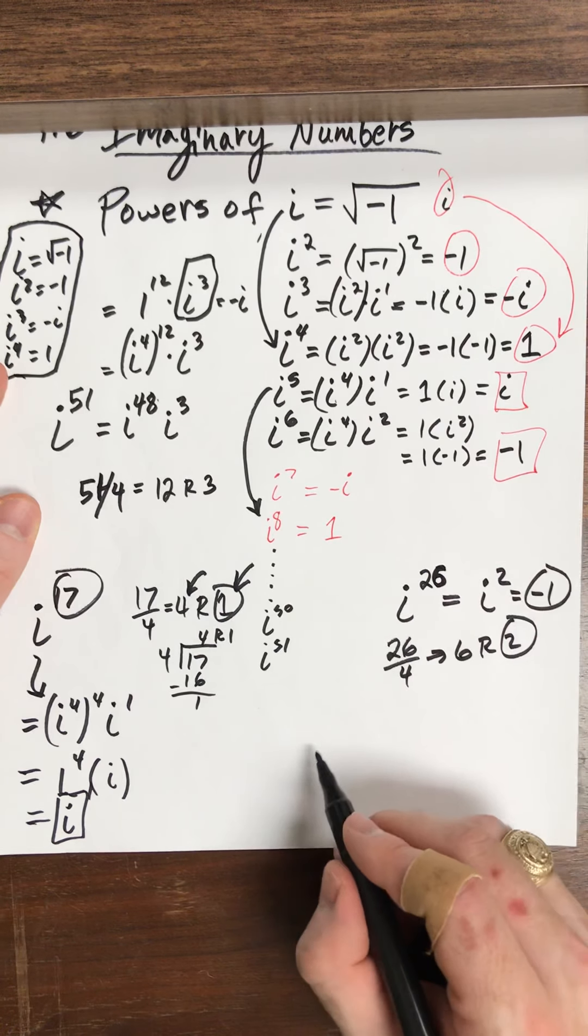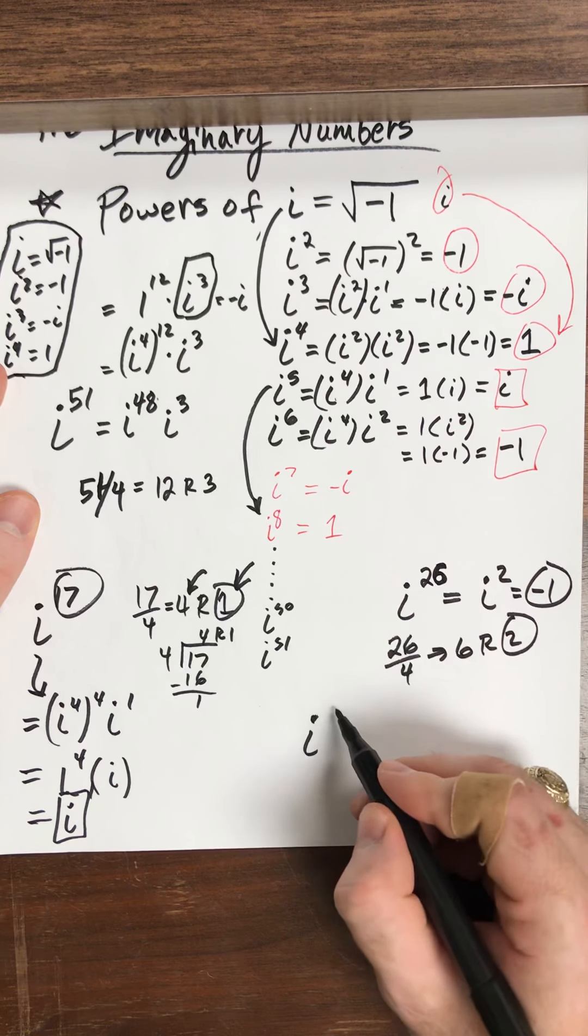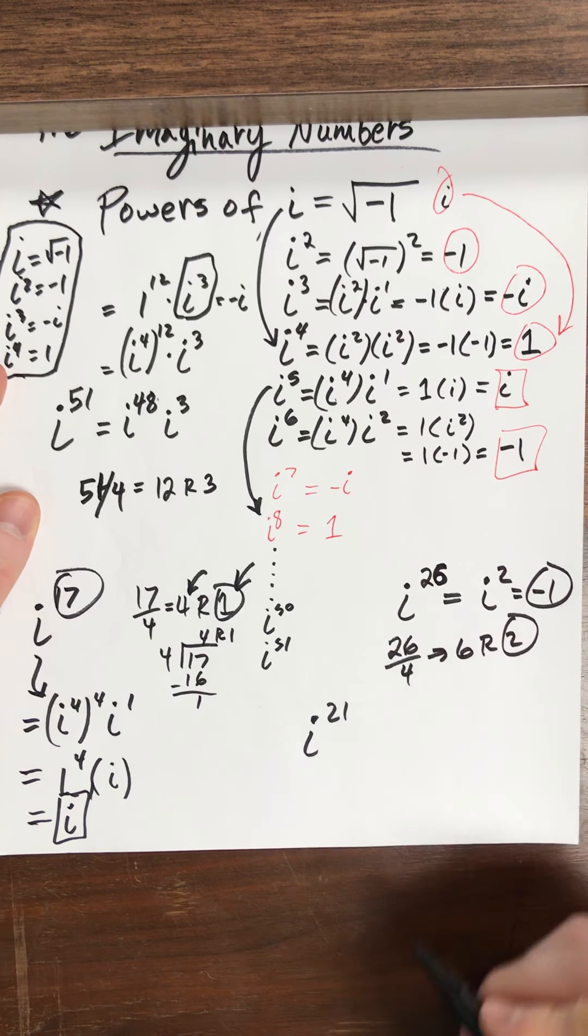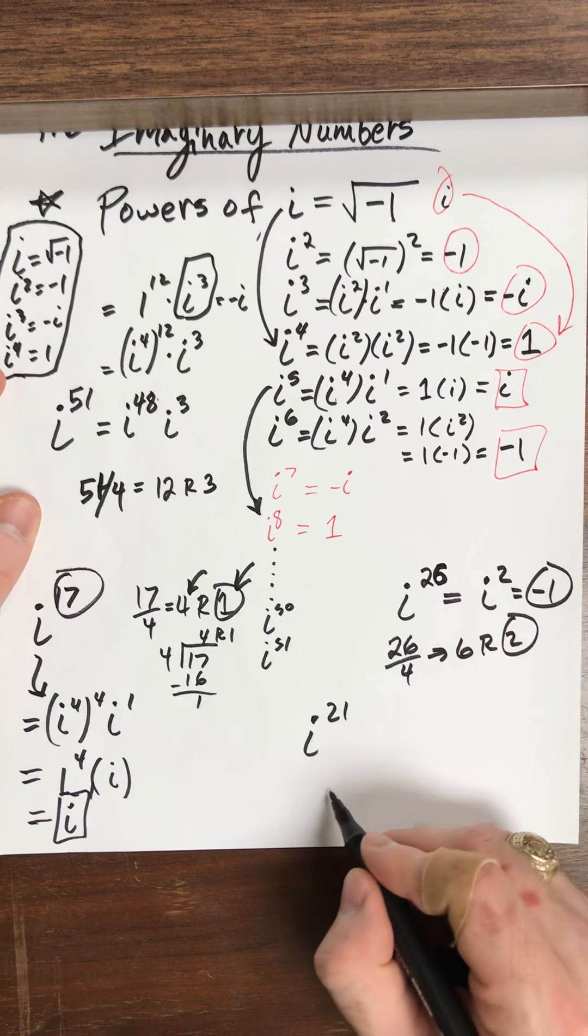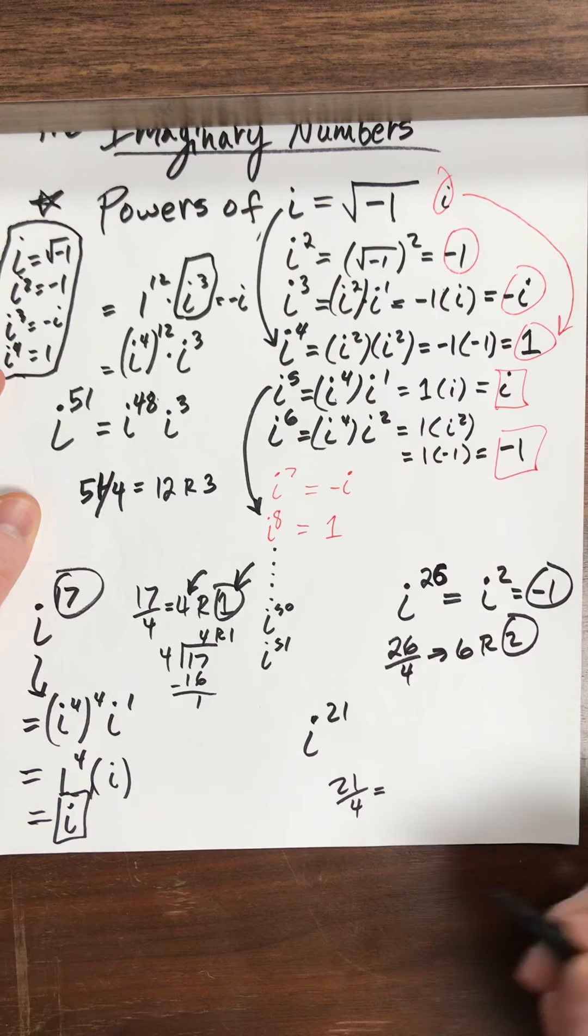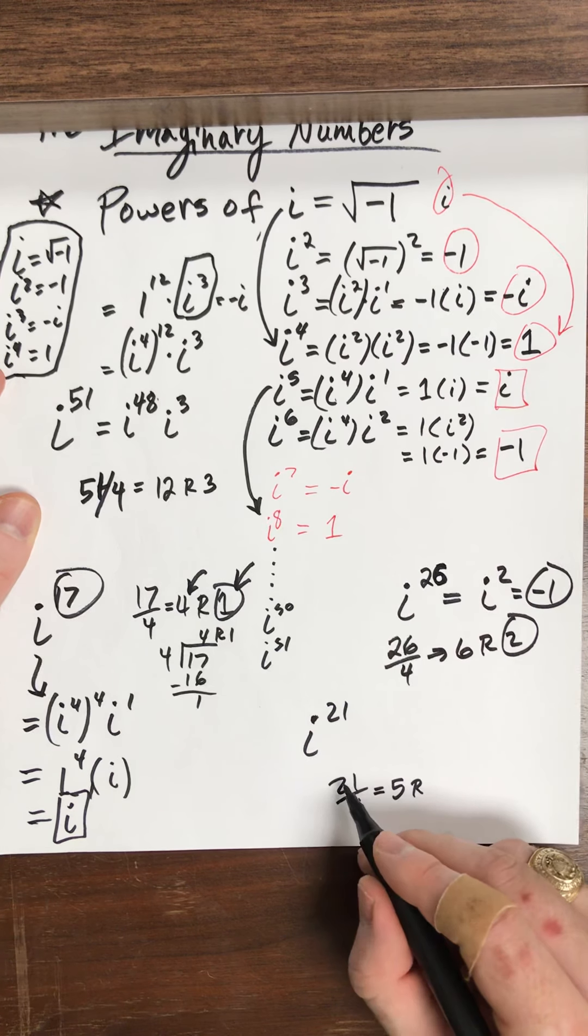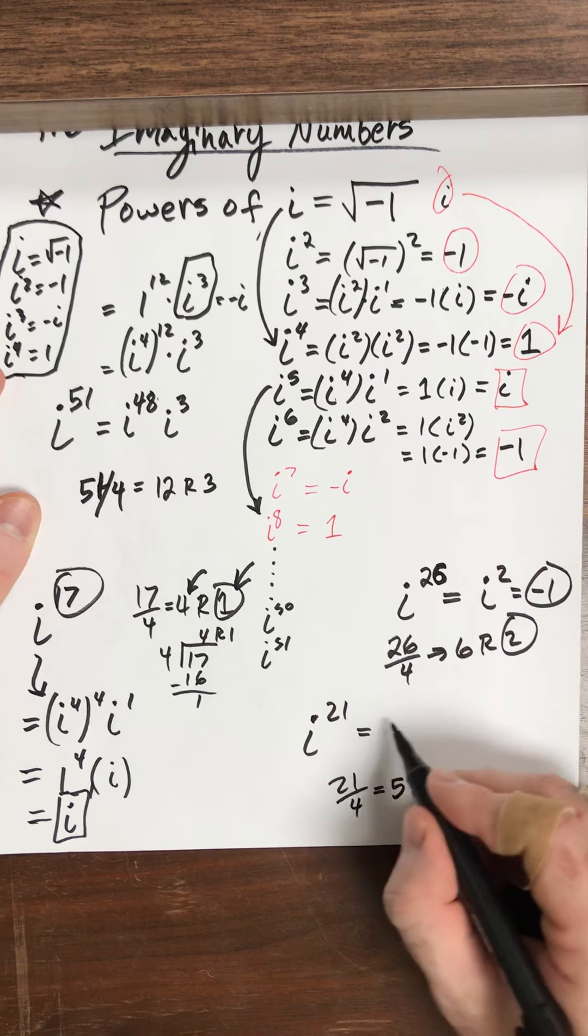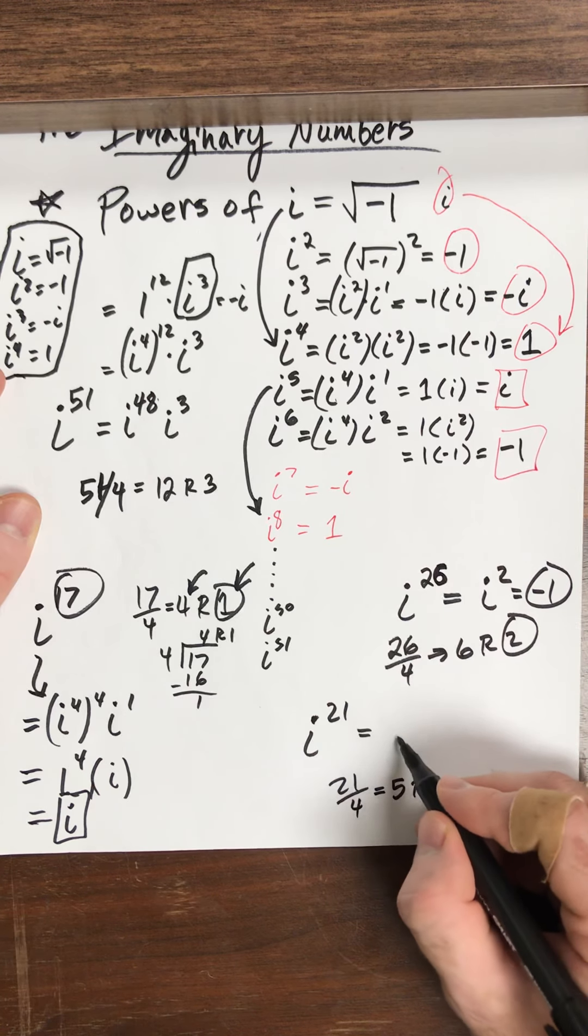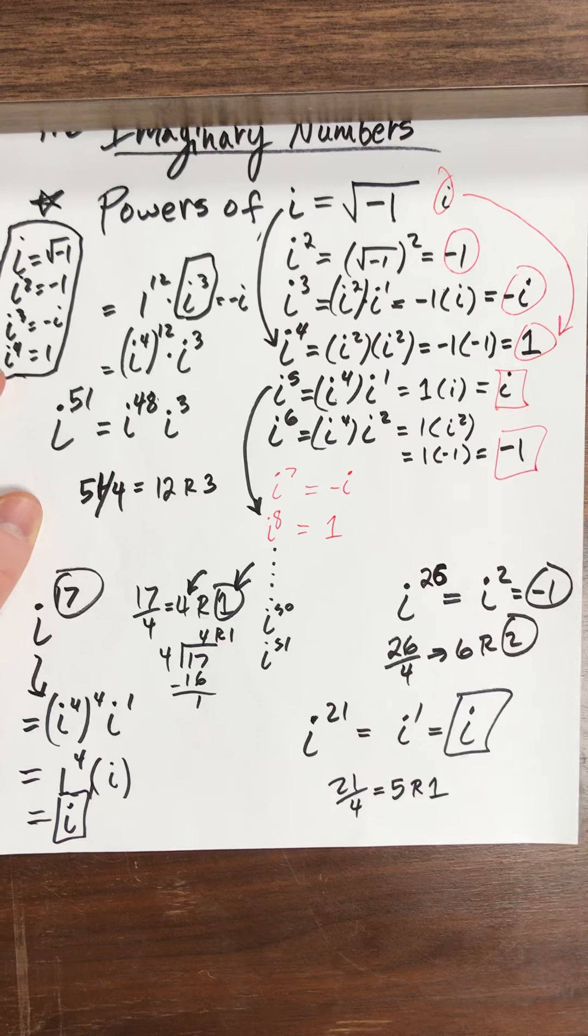I promise you, this is the last one right here. So here we go. So i to the 21, i to the 21. Let's try it out. I take 21, I divide by 4. What do I get? I get 5, and what's my remainder? So 4 goes into 21 five times, so 4 times 5 is 20. I have a remainder of 1, so this is really equal to i to the 1. So that's just i, so my answer is i.